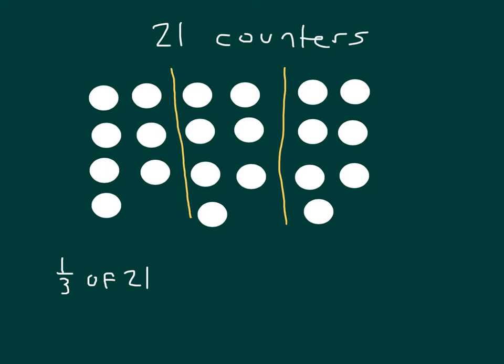So 1/3 of 21, this would be a third of it. So 1/3 of 21 is equal to 7.